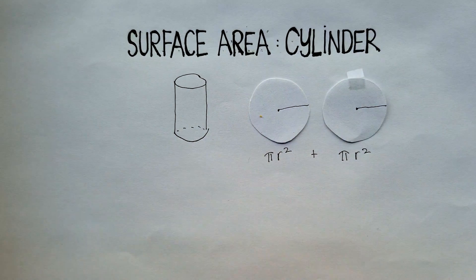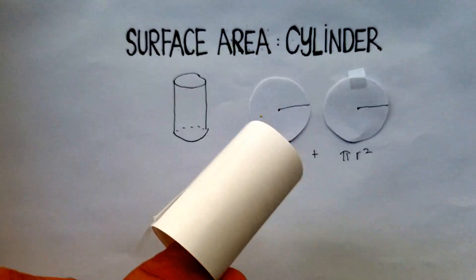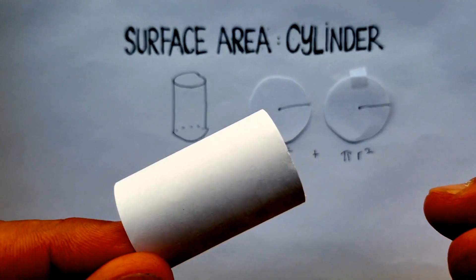Now here's the more difficult part, and that is the main body, the curved area. How do I do this?